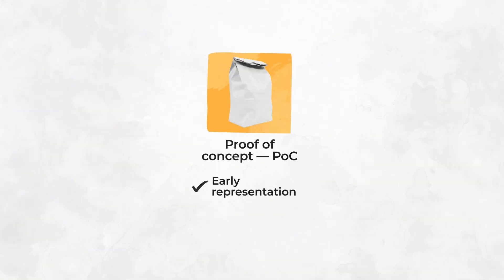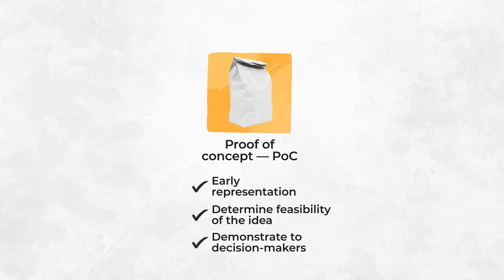A proof of concept, or POC, is a rough and early representation of the future product created in the cheapest and fastest way possible — sometimes even within days. The primary purpose is to determine if the product idea is technically feasible and demonstrate to decision makers that it can and should be done. You can't show it to users yet — perhaps it looks ugly, duct-taped together, or doesn't even have an interface.